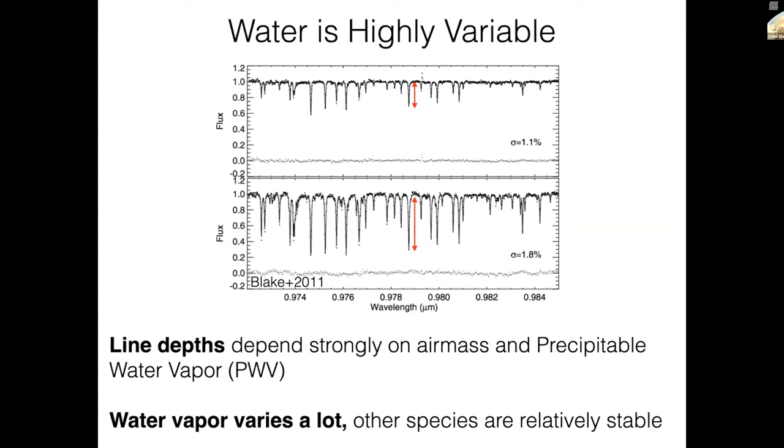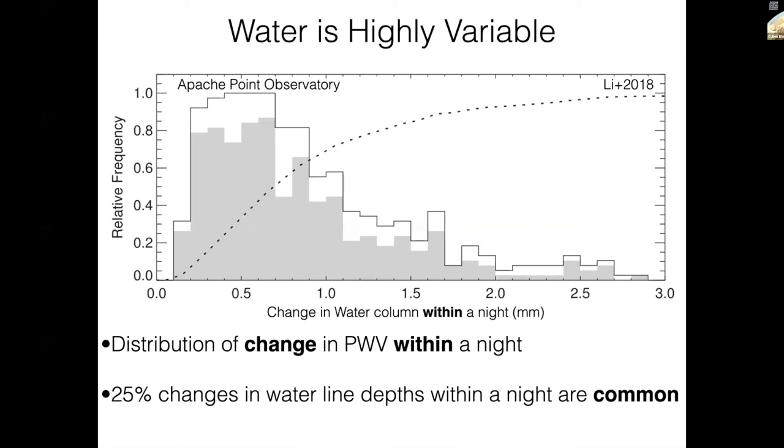The line depth depends a lot on air mass, because that's the path length through Earth's atmosphere. But it also depends on something we call precipitable water vapor, which is measured in millimeters. At an excellent observing site, that quantity could be something like a millimeter. This is a histogram of the change in precipitable water vapor within a night at Apache Point Observatory in New Mexico. You can see it's quite common to have a change of half a millimeter or more within a night. So 25% changes in water line depths within a night are very common. That's something we're going to have to deal with for EPRVs.